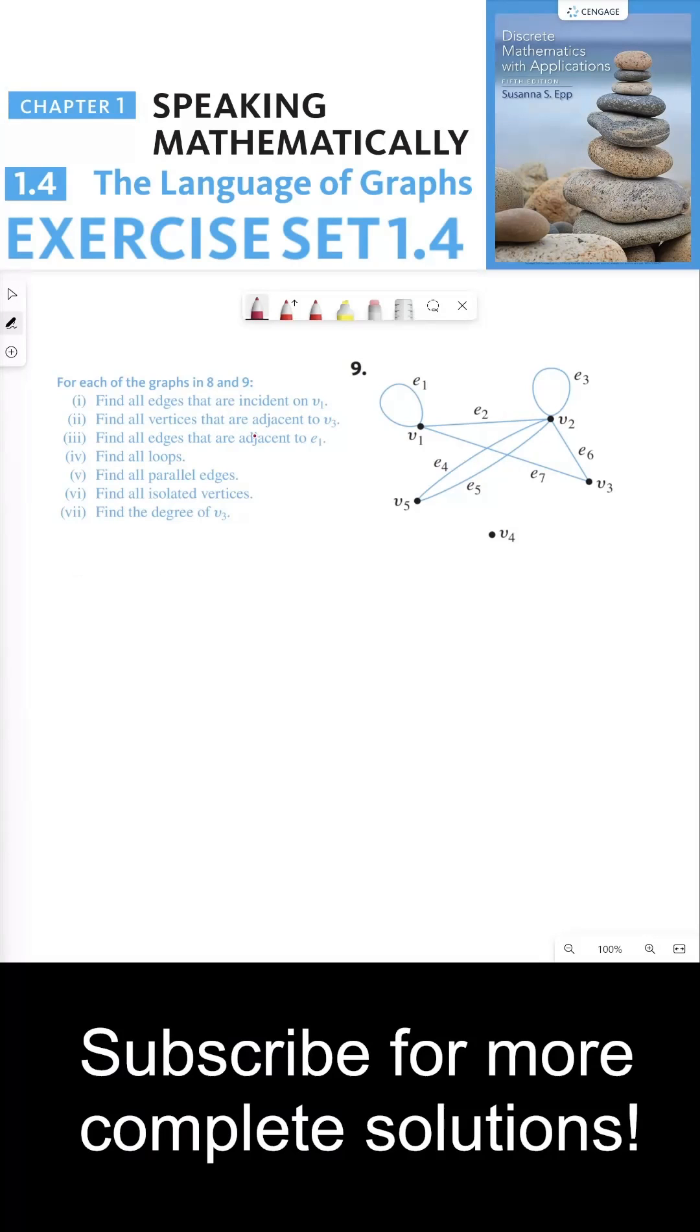So for part I, we need to find all the edges that are incident on V1. So there's V1. The edges that are incident on V1 are edge 1 and edge 2 and edge 7.